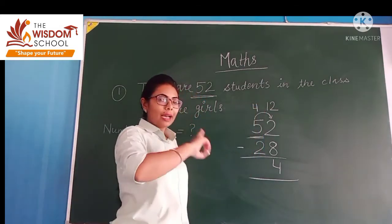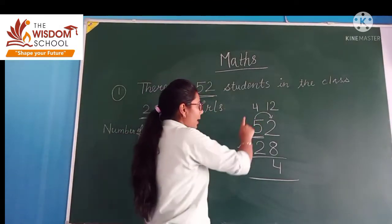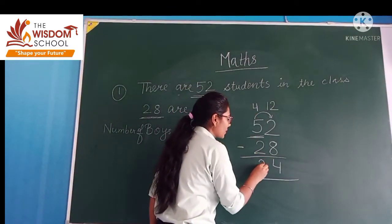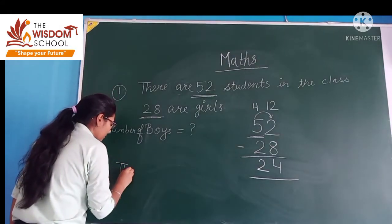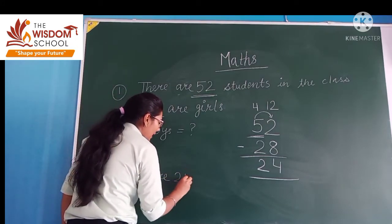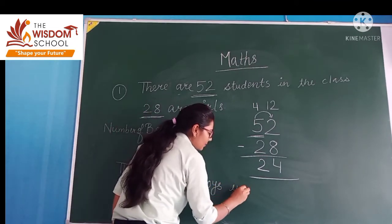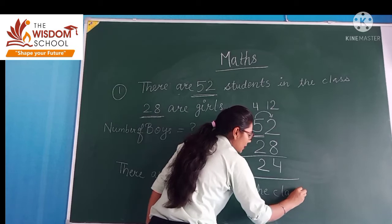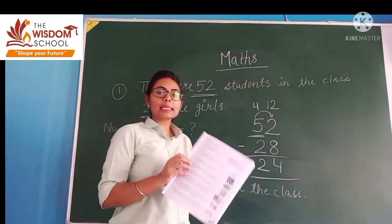So the ones place gives us 4. Now for the tens place, we have 4 remaining after borrowing, minus 2 is 2. So the number of boys — there are 24 boys in the class.